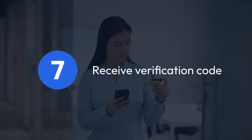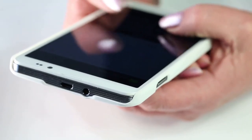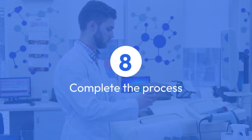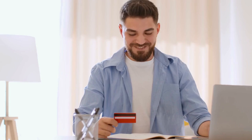Step 7: Receive Verification Code. You might be asked to enter a verification code. This code will be sent to your registered mobile number or email address. Step 8: Complete the Process. Enter the verification code you received and click Submit. Your new account will be linked to your LandBank iAccess.